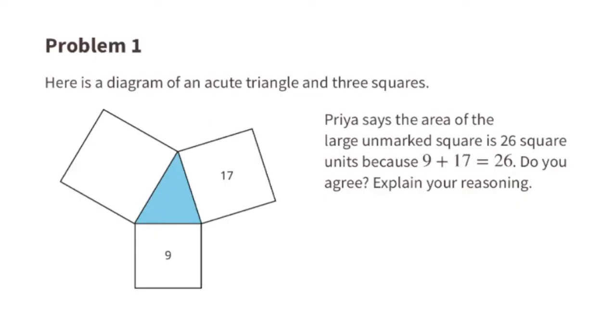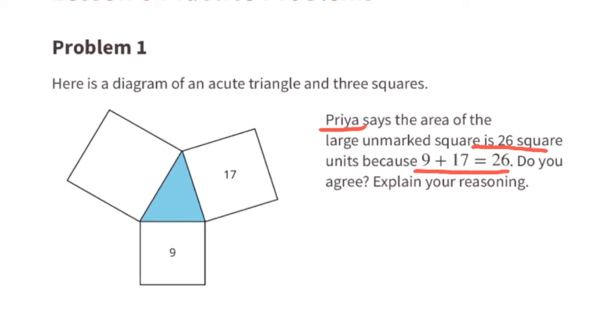Problem number one. Here is a diagram of an acute triangle and three squares. Priya says the area of the large unmarked square is 26 square units because 9 plus 17 equals 26. Do you agree? Explain your reasoning.